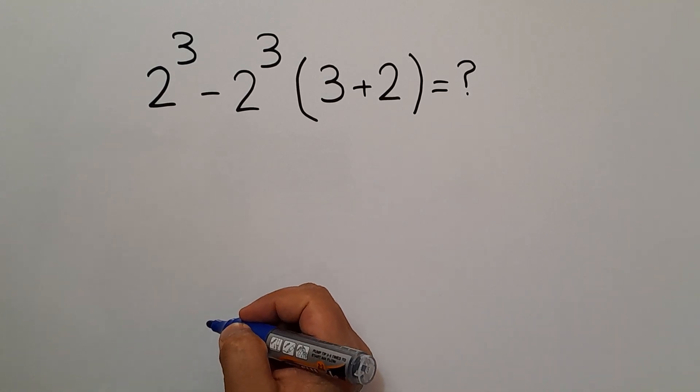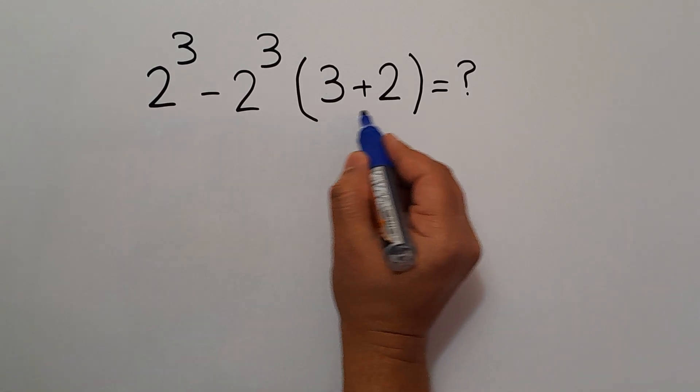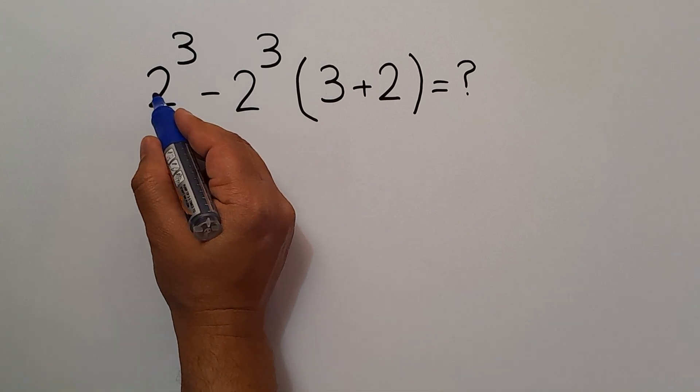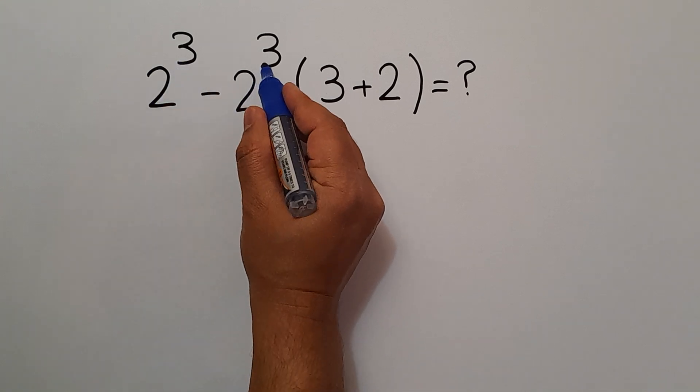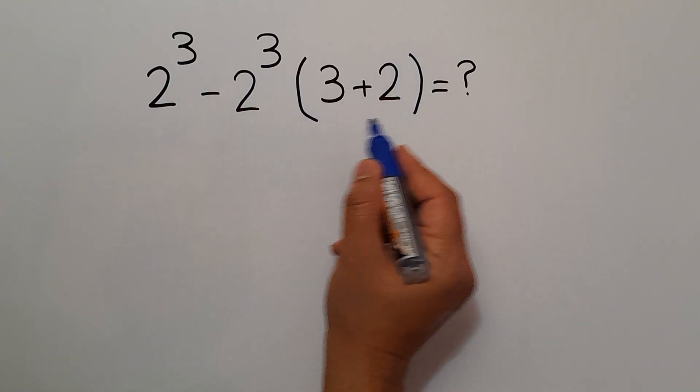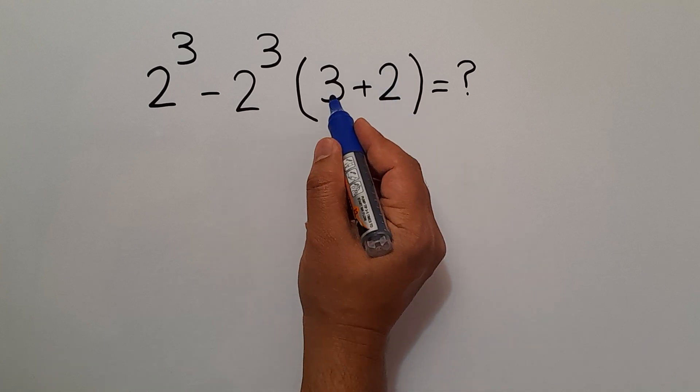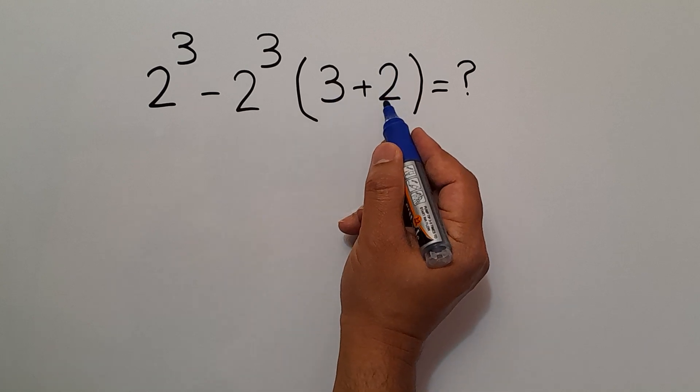Hey guys and welcome to this video. In this video, we want to find the value of this expression, which is 2 cubed minus 2 cubed, then times these parentheses. And inside these parentheses, we have 3 plus 2. Are you ready to solve?